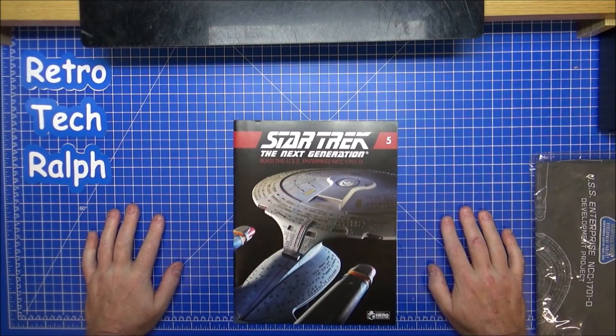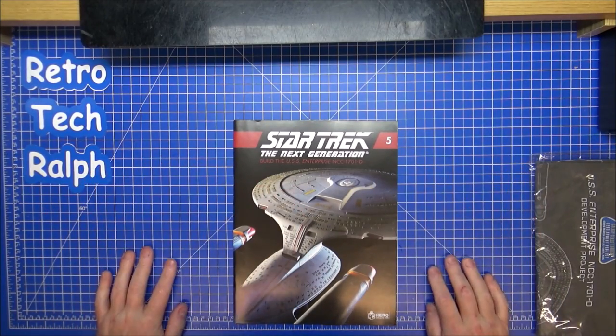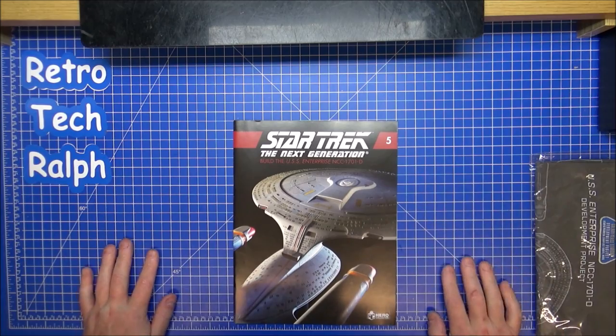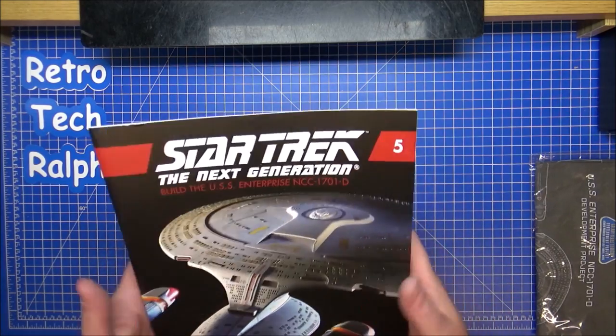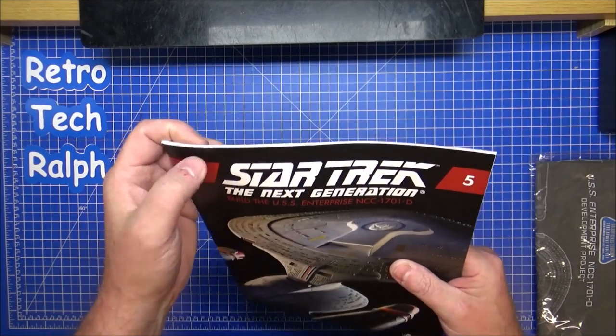Hi guys, Retro Trek Ralph here with another edition of the Star Trek Next Generation Build, the USS Enterprise 1701D by Eagle Moss and Hero Collector. This time it's magazine five.